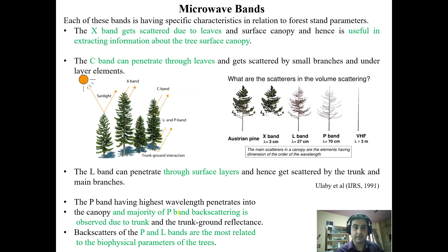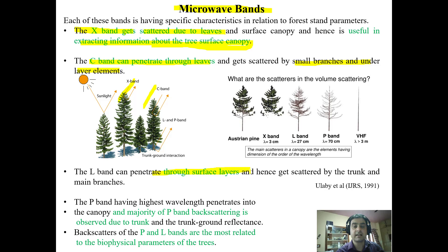Looking at the different microwave bands: the X band has a shorter wavelength and is scattered by leaves, giving information about the upper tree canopy. The C band has slightly more penetration, passing through leaves and scattering off small branches and underlayer elements. The L band penetrates through surface layers and scatters at the trunk level, providing potential information about biomass and main branches.